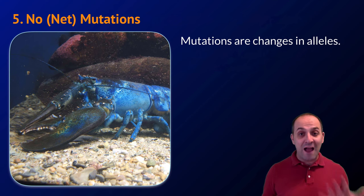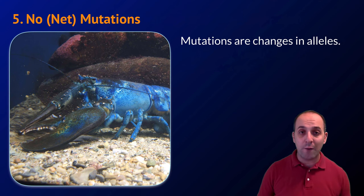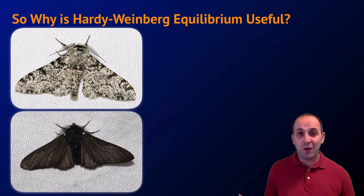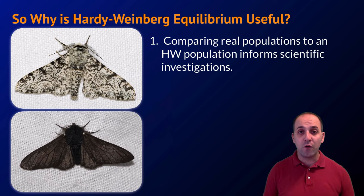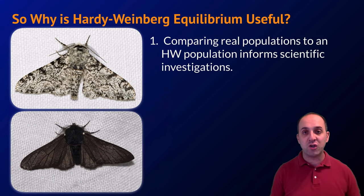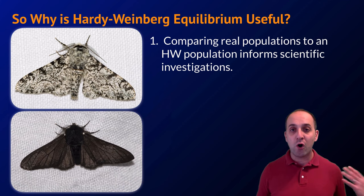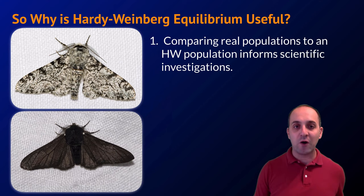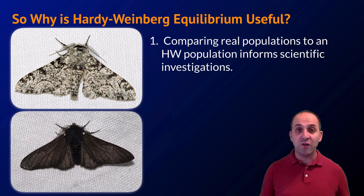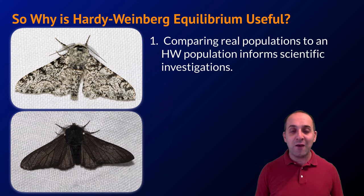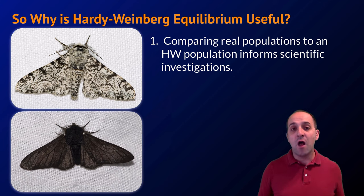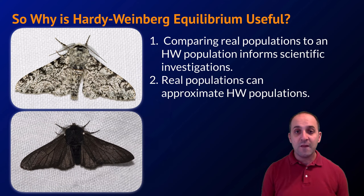Those five conditions don't exist in the real world, so why is Hardy-Weinberg equilibrium useful? Because we can compare a real population to what it would be if it were in Hardy-Weinberg equilibrium, which helps us figure out what is going on and informs our scientific investigations. For example, if moths are way out of equilibrium and tree coloration is changing, that helps us narrow in on the role of natural selection.